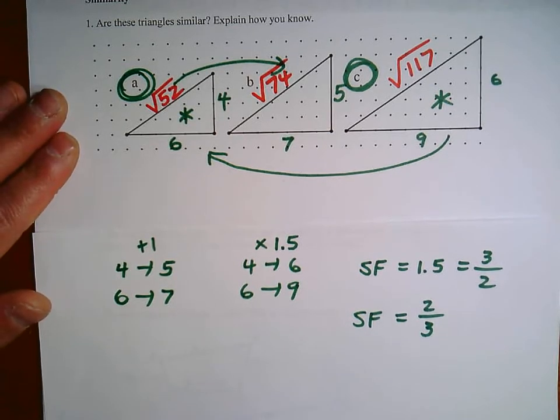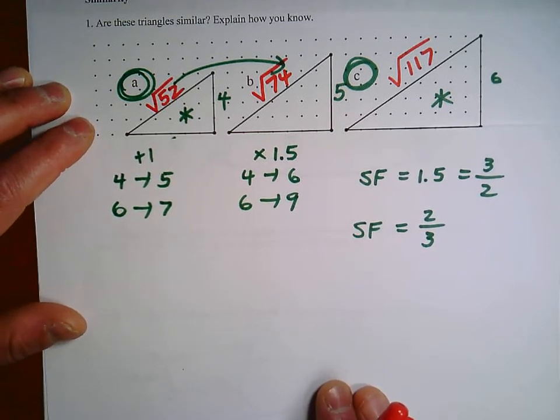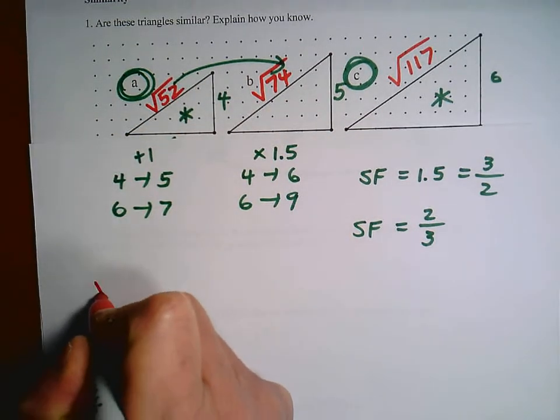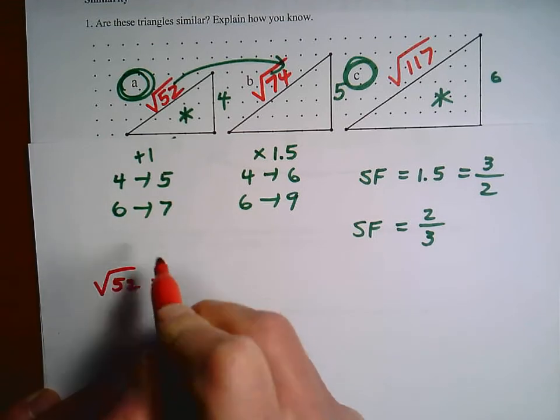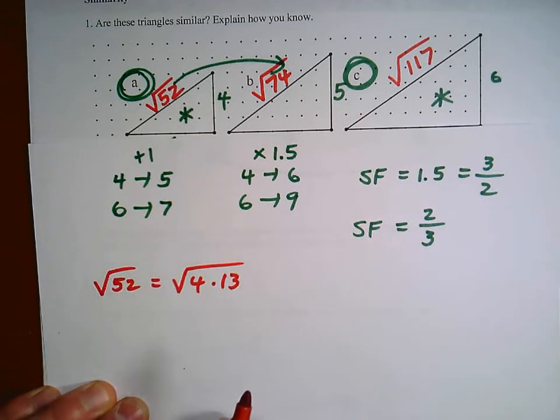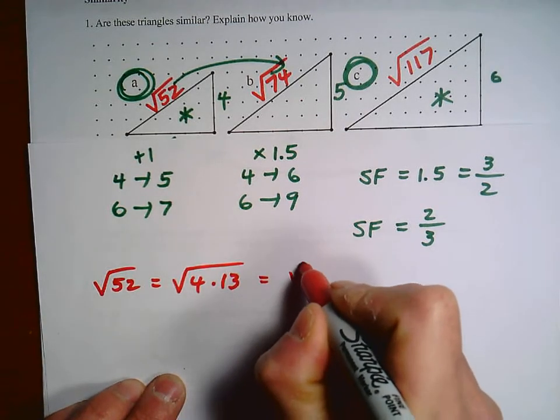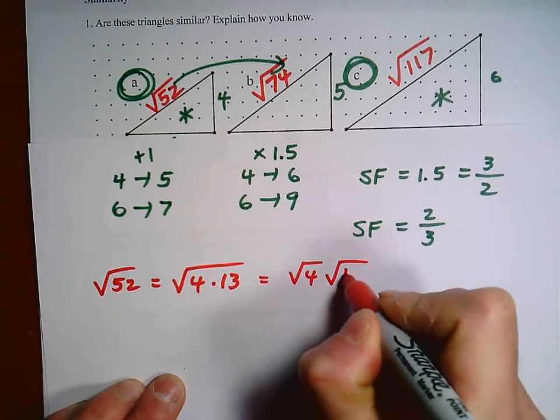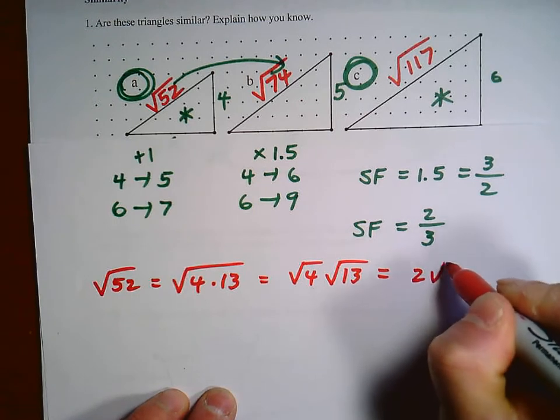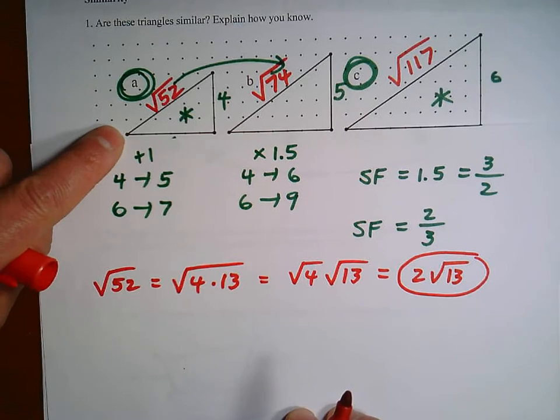So we already know it's triangles A and C that are the similar ones. So do the math. If you look at square root 52, you might remember some of this math. You can split it up here as the product of these two, and then we can write this. And the square root of four is two. So we get this measurement for the longest length in the first triangle.